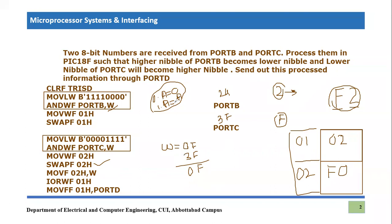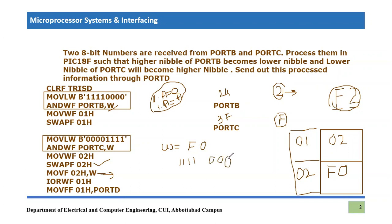The swapped result F0h in file register 02h is then moved back into the working register using the MOVF command (move file register 02h to working register). Now the working register holds F0h in binary: four ones followed by four zeros. Next, we apply the IORWF instruction — inclusive OR — between the working register and file register 01h.